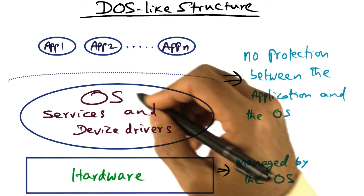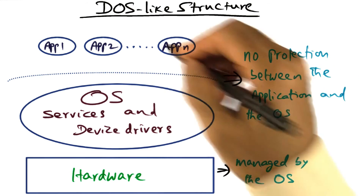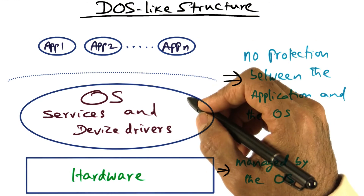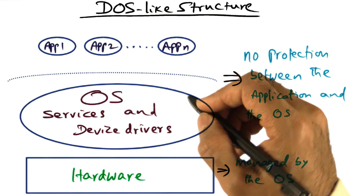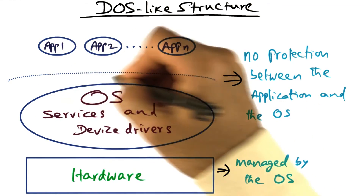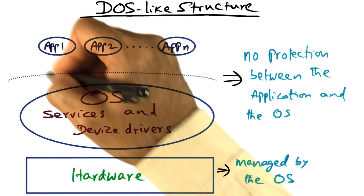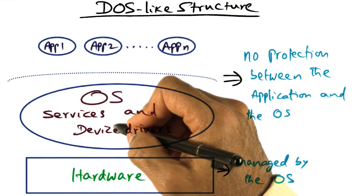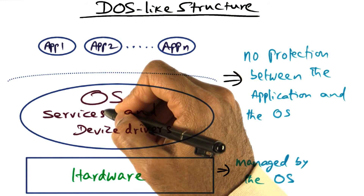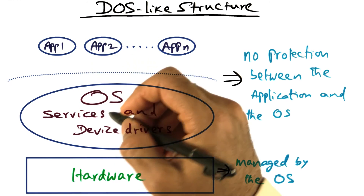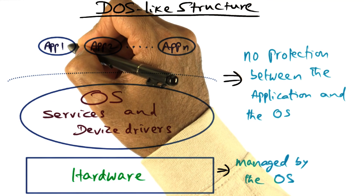Performance and simplicity was the key, and protection was not the primary concern in the DOS-like structure. You can get good performance from the very simple observation that there is no hard separation between the application and the operating system. The operating system is not living in its own address space — the application and the operating system are in the same address space. Therefore, making a system call happens as quickly as the application would call a procedure that the application developer wrote himself or herself.